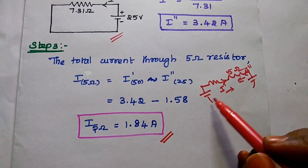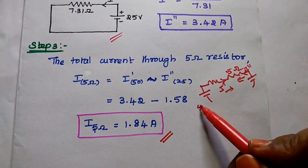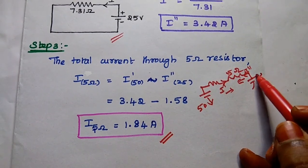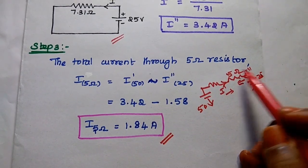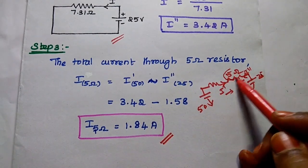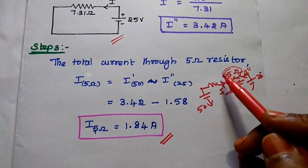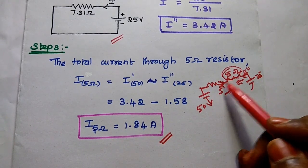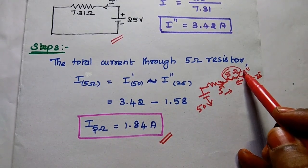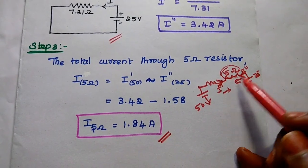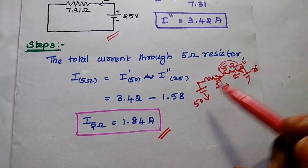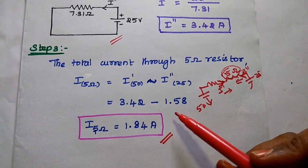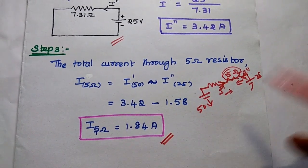In this problem we have two voltage sources, and one current is flowing in one direction through the 5 ohm resistor while another is in the opposite direction. That is why we are taking the difference — the answer is 1.84 ampere.